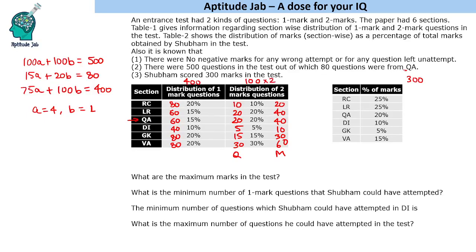The first question asks: what is the maximum marks in the test? With 100 two-mark questions giving 200 marks and 400 one-mark questions giving 400 marks, the total is 600. Next question: what is the minimum number of one-mark questions Shubham could have attempted? To minimize one-mark attempts, we assume he gets as many marks as possible through two-mark questions. We also find his section-wise scores from his 300 total marks.